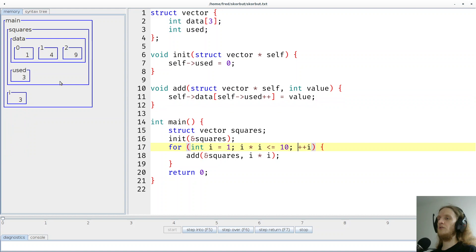And then the for loop will stop because 16 is bigger than 10. And then the program terminates. So we were lucky. Three was big enough.